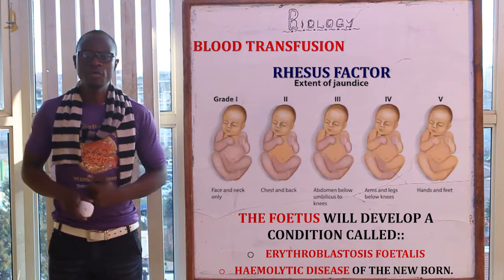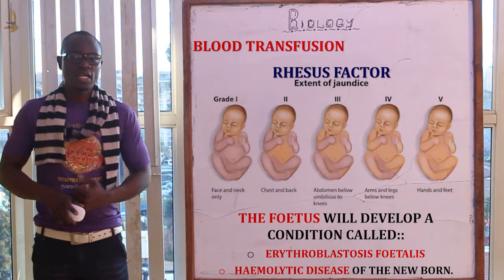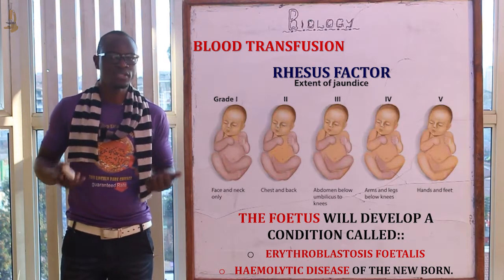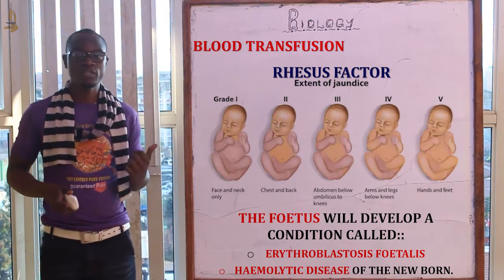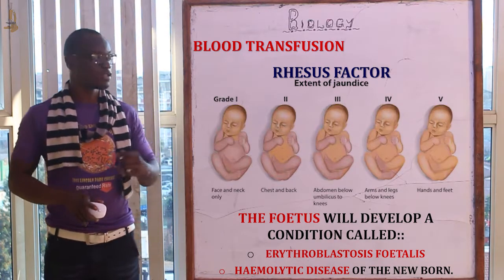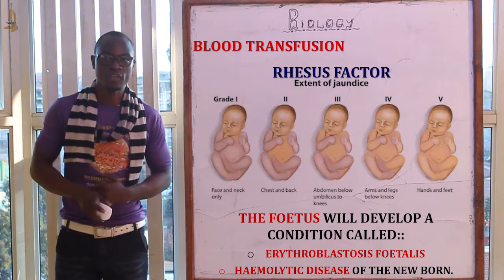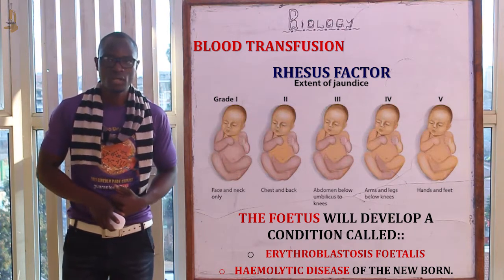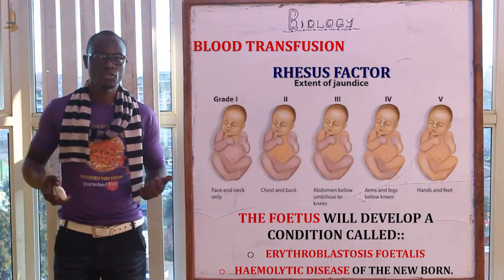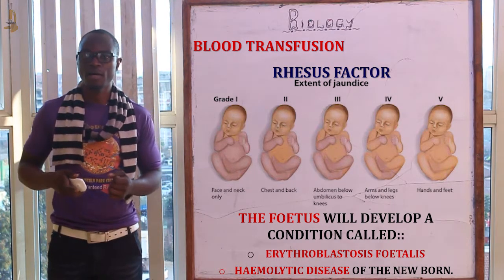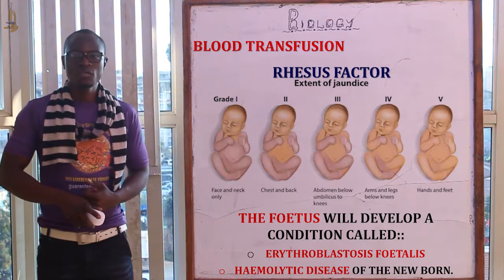Affected babies mainly have yellow skin and may develop a condition called jaundice. Jaundice is an indication that the child's red blood cells have been destroyed, and the child might suffer from anemia as a result. This condition can be fatal, though not always.